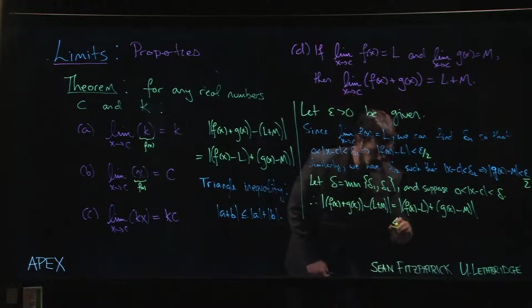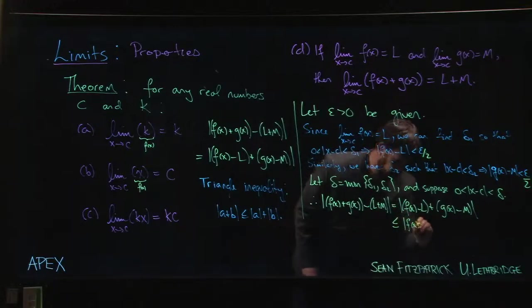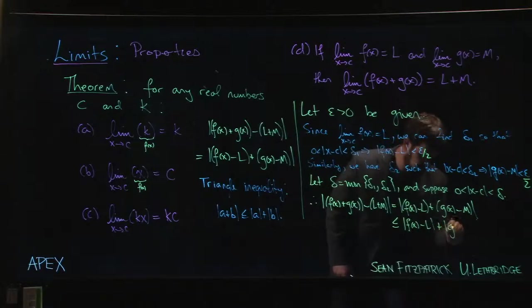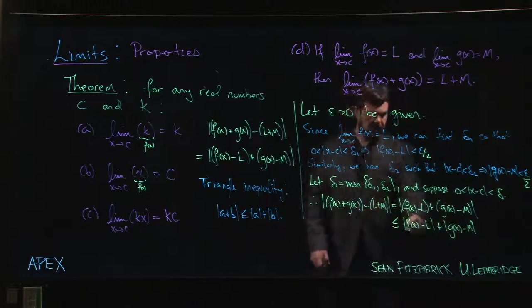This is less than or equal, by the triangle inequality, to |f(x) - L| + |g(x) - M|.